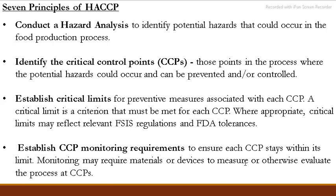Now, the principles of HACCP — there are seven principles. The first principle is to conduct a hazard analysis. We identify how hazardous conditions and potential contamination may occur during food production. The second principle is to identify the critical control points — the points where we can see potential hazards.